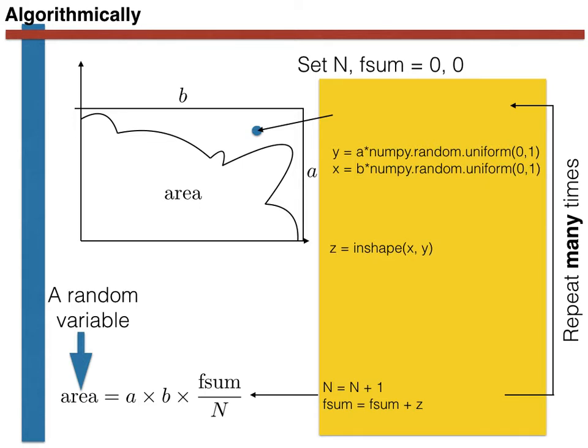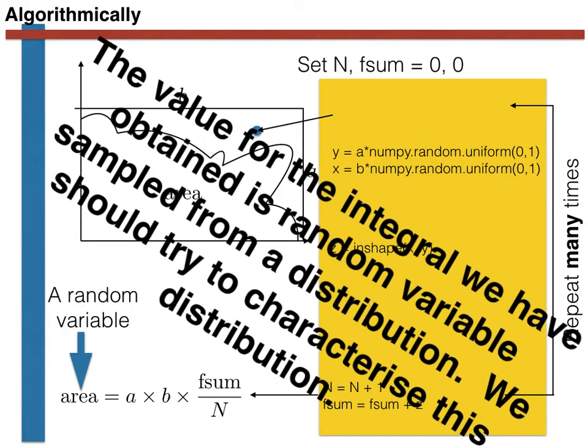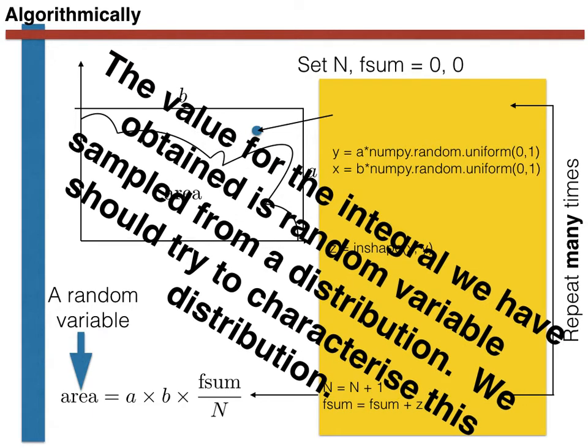Consequently, if we were to repeat our calculation, we would get a different answer. In other words, when we compute an integral using Monte Carlo, we are sampling from a distribution. We thus shouldn't simply take the first sample from our distribution as the answer. We should instead take multiple samples and should attempt to characterise the shape of the distribution that we are taking these samples from.